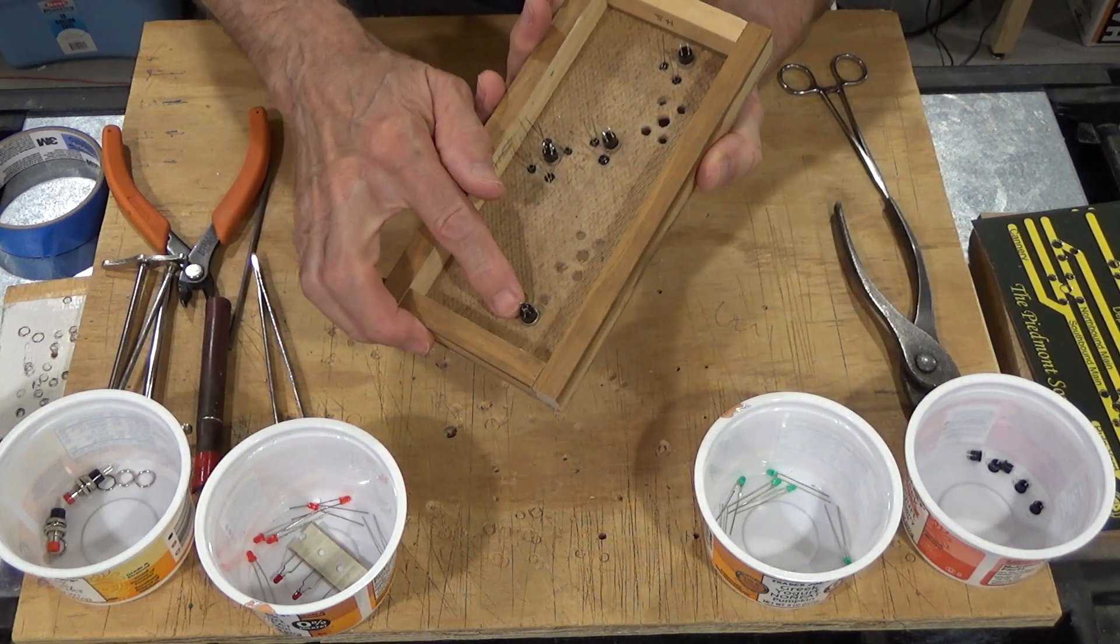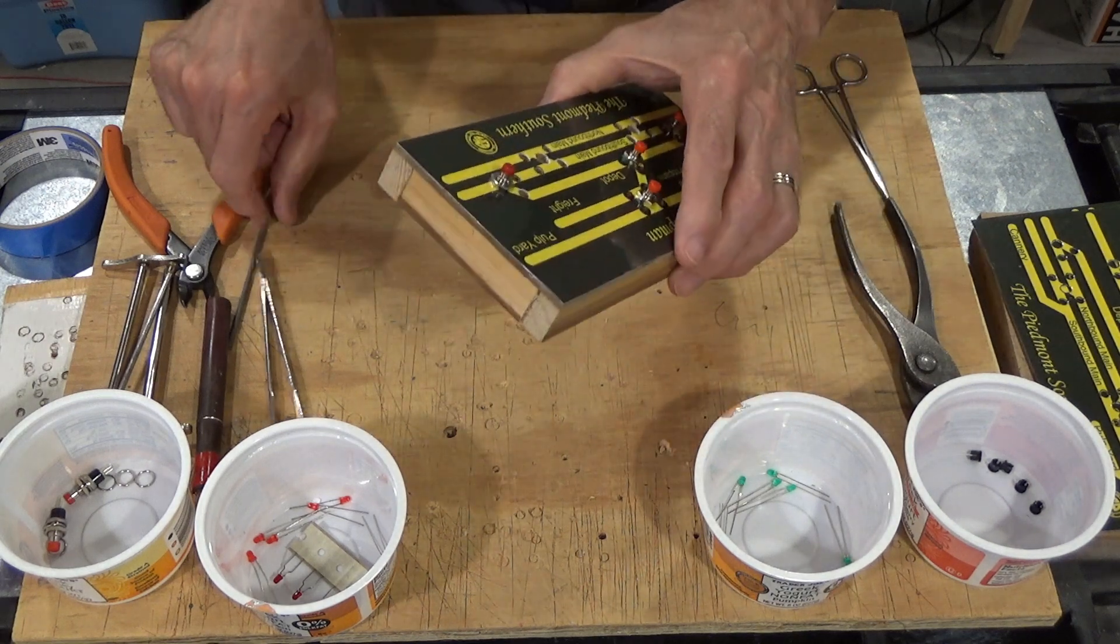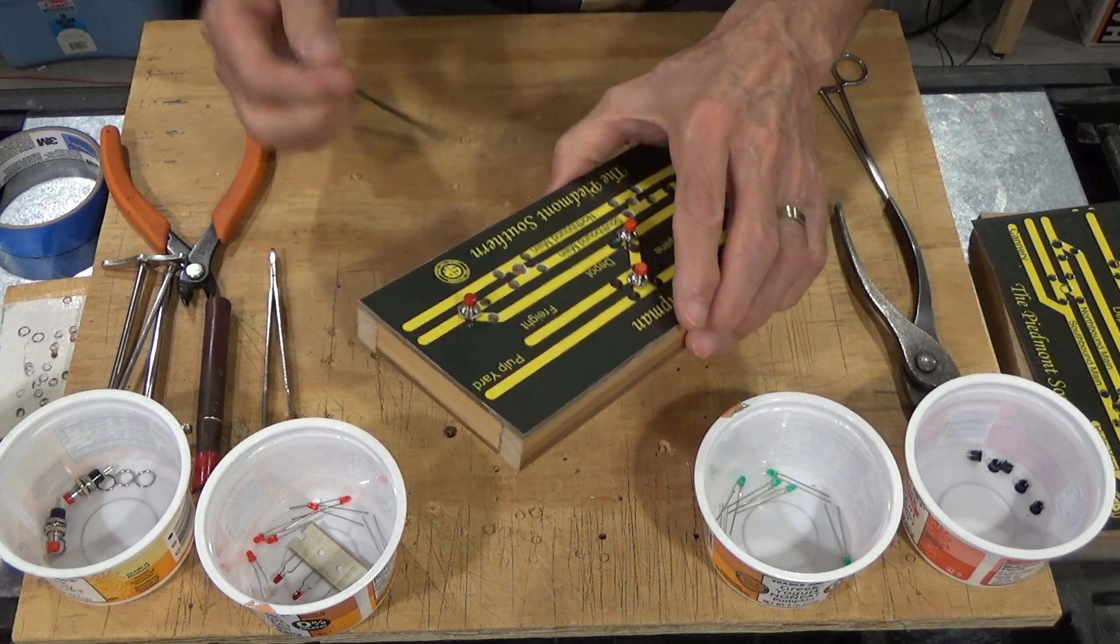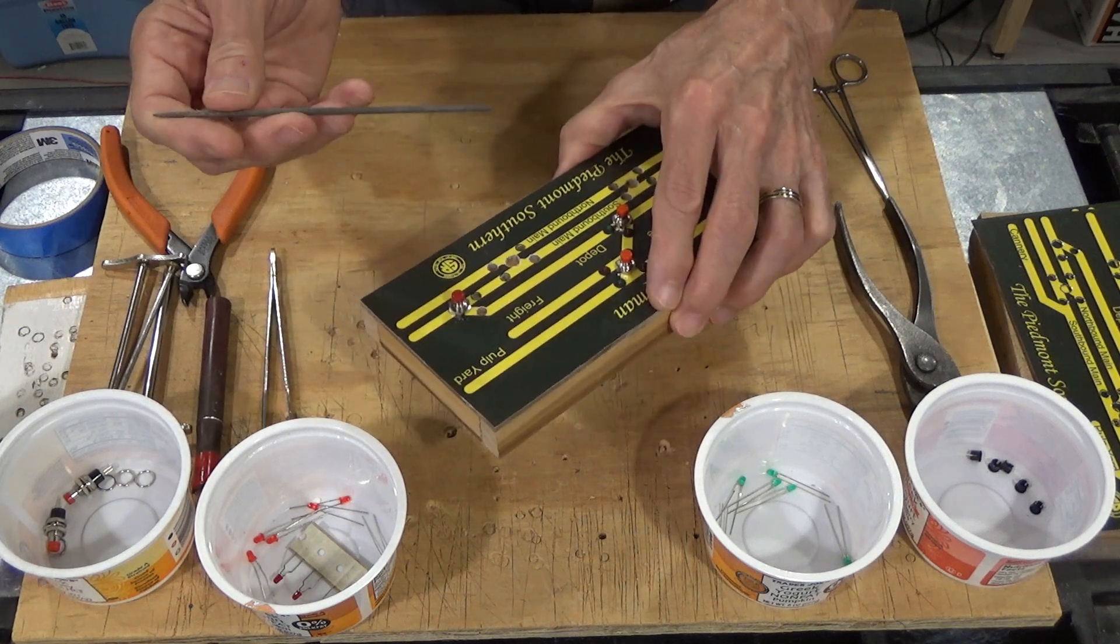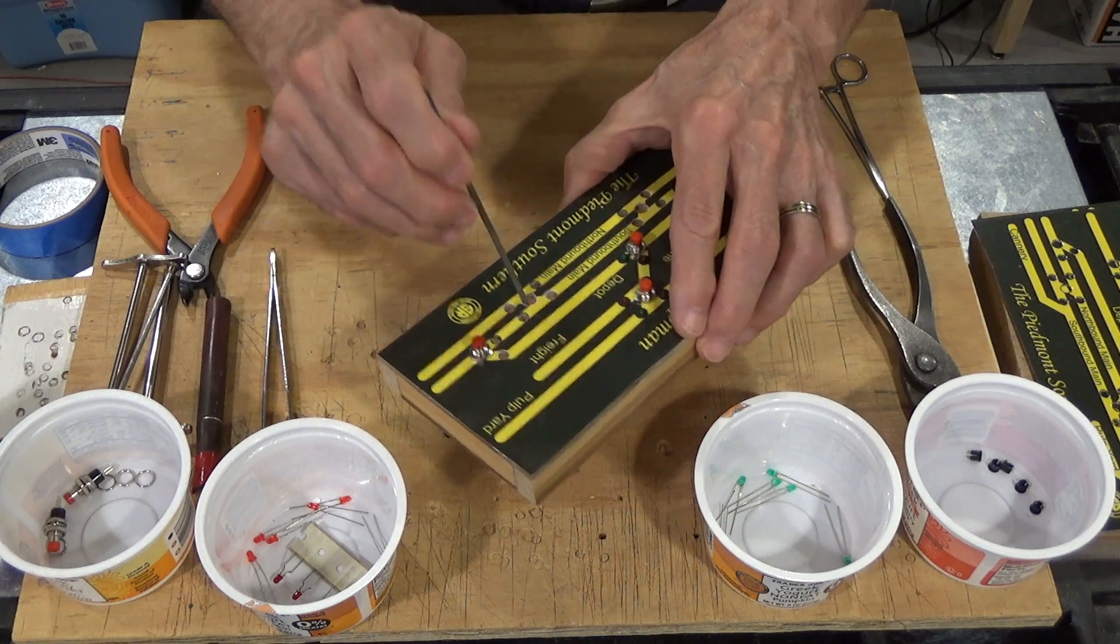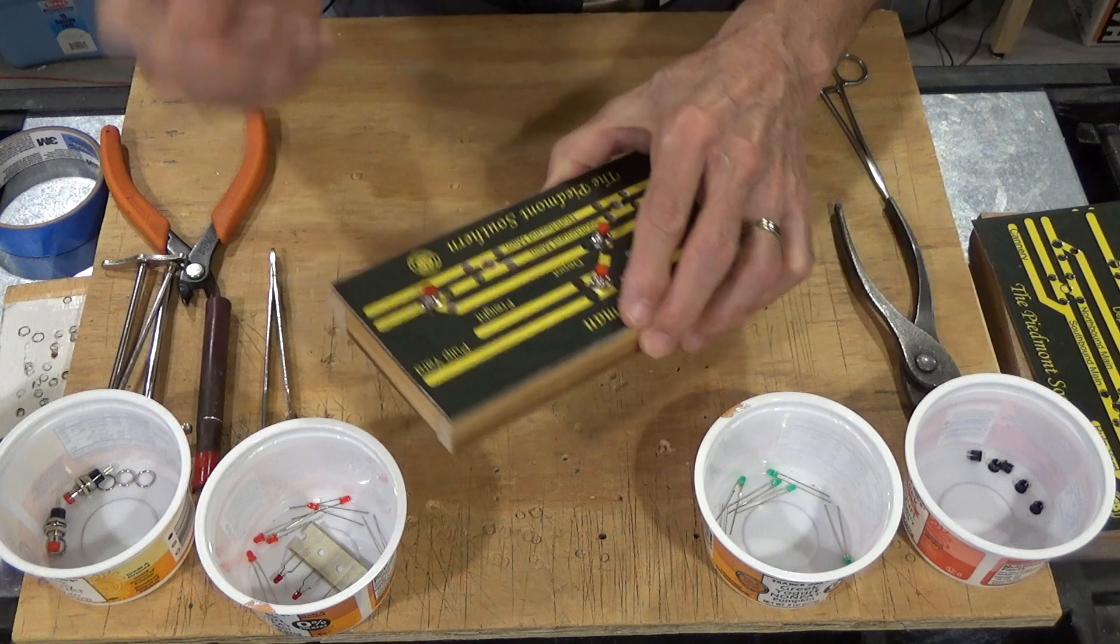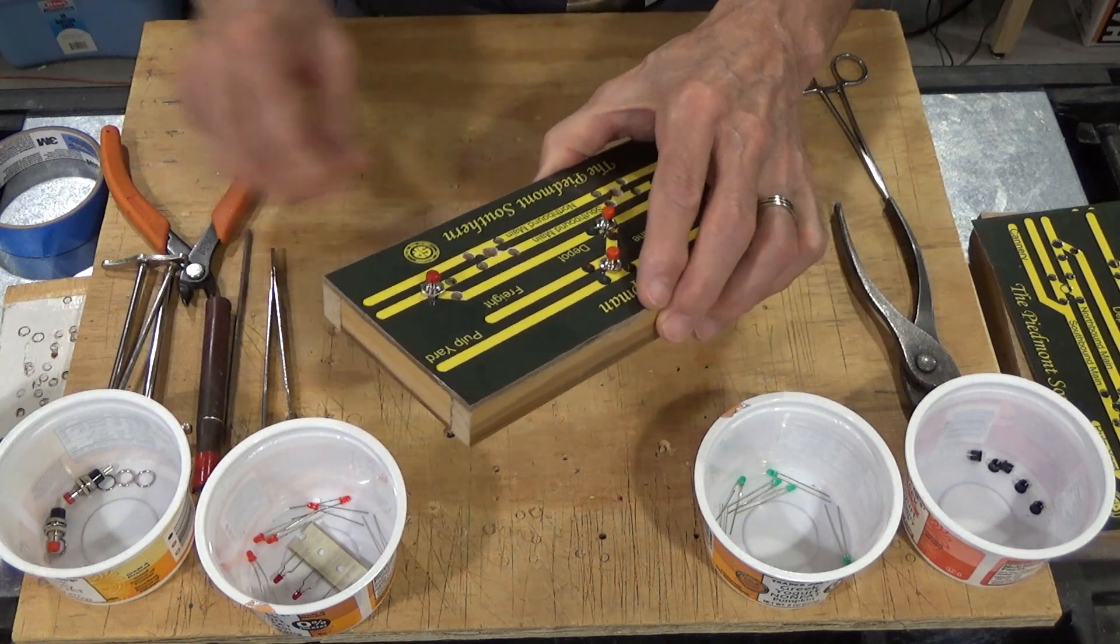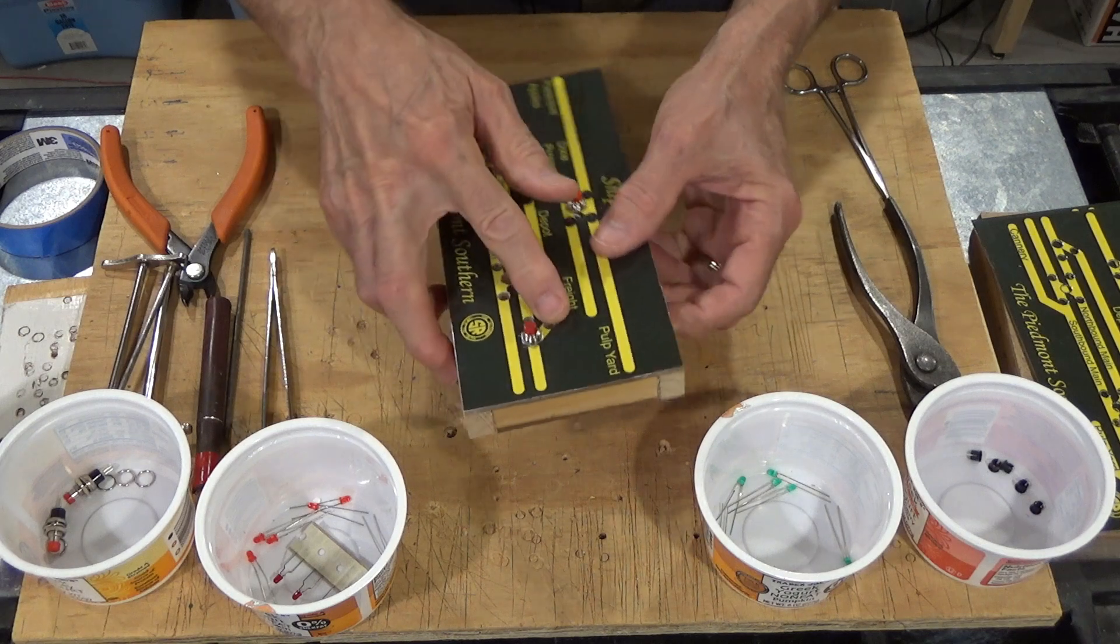Very easy, simple process. You might find that if you've drilled your hole slightly undersized, that a round file, like this one here, can be very useful in creating a slightly larger hole. Okay, let's talk then about adding the LEDs to the display.